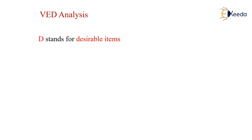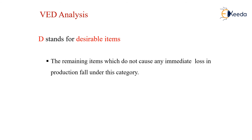D stands for desirable items, where the remaining items which do not cause any immediate loss in production fall under this category. For example, foot guards or foot rests, which may or may not be replaced, and which do not cause any immediate loss to efficiency or other parts.